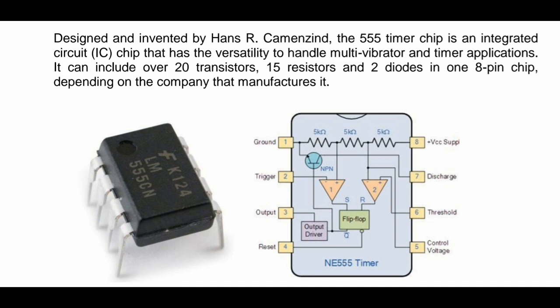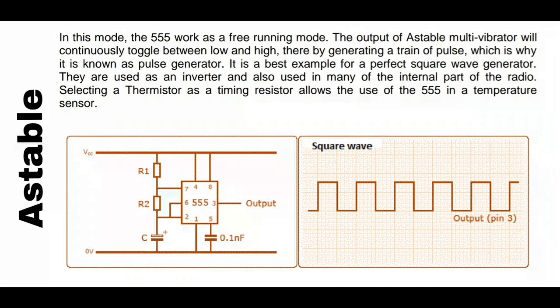Now let's talk about the first mode: astable mode. This is the circuit diagram of astable mode, which works as a free-running mode. In this mode, the output comes as a square wave generator. The best example of astable mode is the indicating light of an ambulance — it is the best example of a perfect square wave.